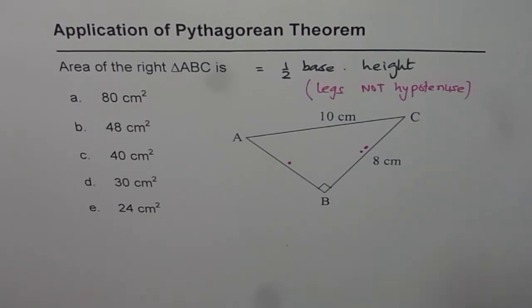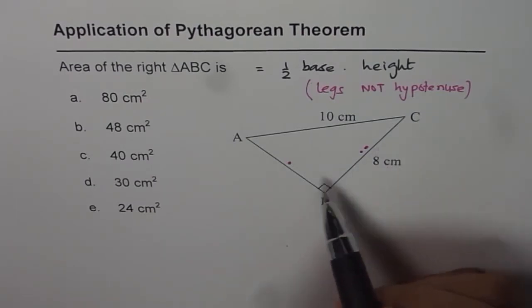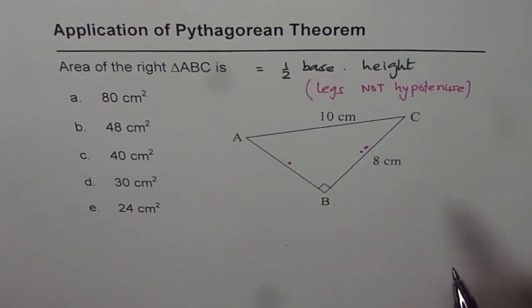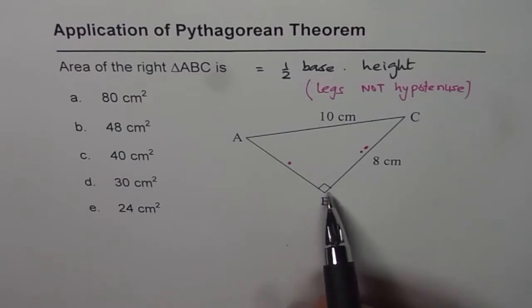Now let's get back to the question. We need to know AB and BC to find the area. How can you find AB? This is a right triangle, so using Pythagorean theorem you can find AB.